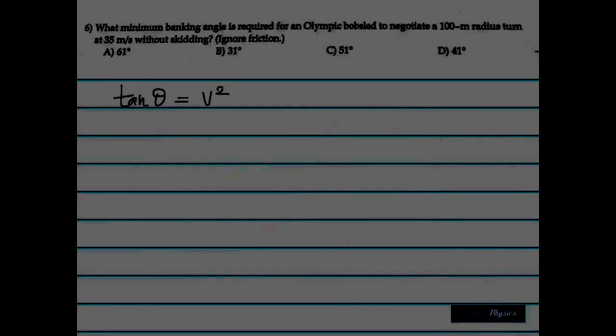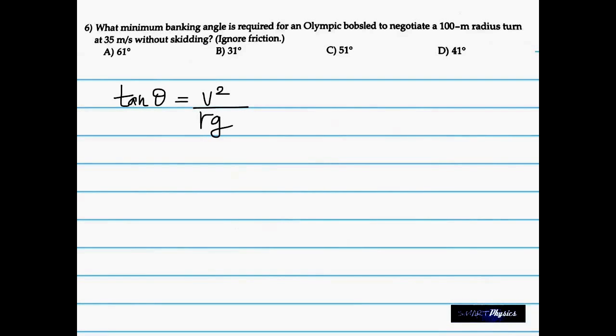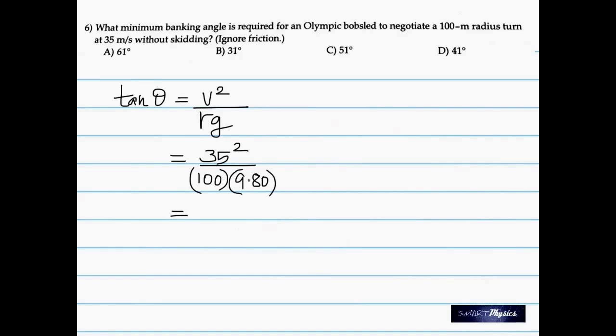Takes us through the sixth question. And in this question, what is the minimum banking angle to negotiate a 100 meter radius turn at 35 m per second without skidding? Banking. The formula for the angle of banking is tan θ = V²/rg. θ is the angle of banking. V is the velocity. R is the radius. And g is acceleration due to gravity. Straightforward question. 35² by 100 meter radius times 9.80. That happens to be 1.25. Once you get tan θ, to find θ, you take the inverse of that. So θ = tan⁻¹ of 1.25. You got to hit shift on the calculator, enter 1.25, and then press the tan key to get 51 degrees.